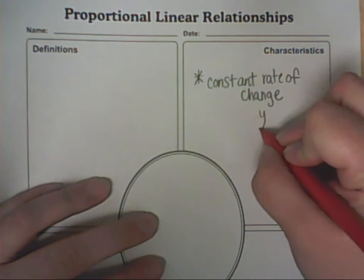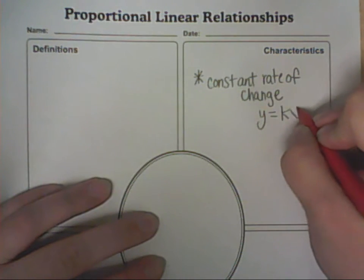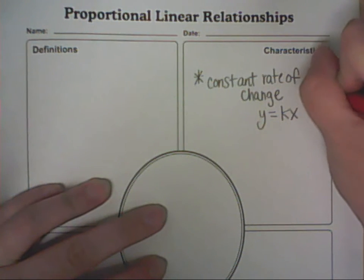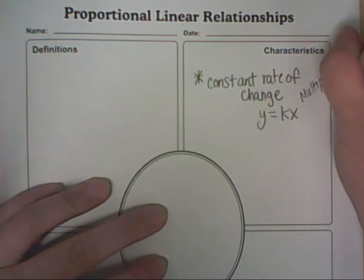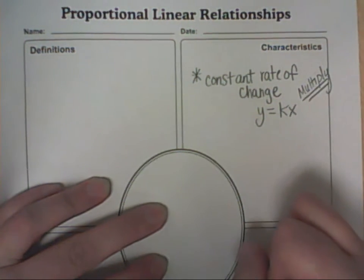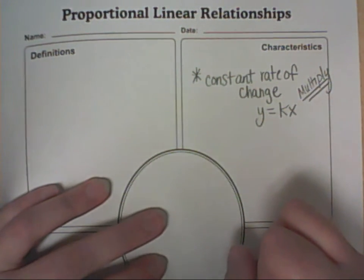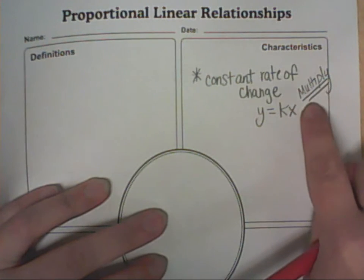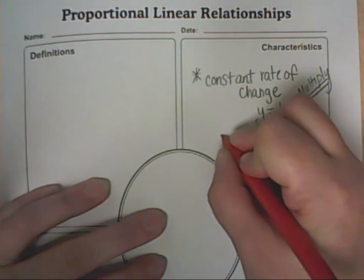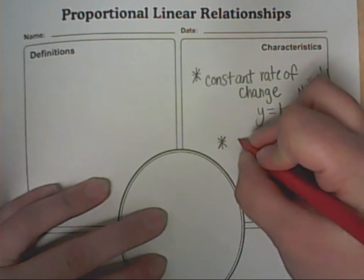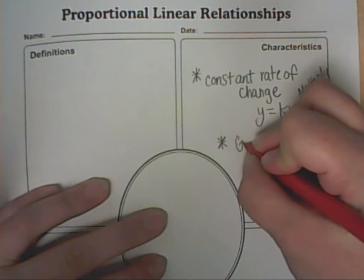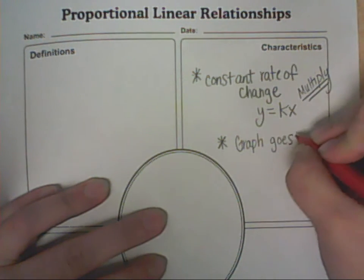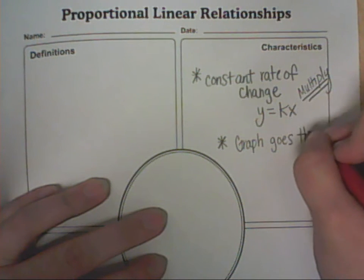We also have y equals kx. What we're going to be looking for is to make sure that we are seeing multiplication in these equations and in the word problems. We want to make sure we multiply the values. Another characteristic is that we want to make sure the graph goes through the origin. The origin is (0, 0), right in the middle of the coordinate plane.